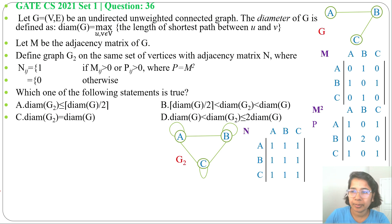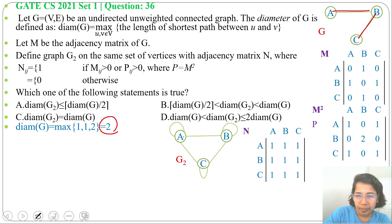Next we'll find the diameter. Diameter of G will be distance from A to B is 1, distance from B to C is 1, distance from A to C is 2. A to B 1 edge, B to C another edge. Now from these three, maximum is 2. So diameter of G will be 2. Next diameter of G2. Distance from A to B is 1, A to C is 1, B to C is 1. So all are 1, from that maximum is 1. Now we got both diameters.